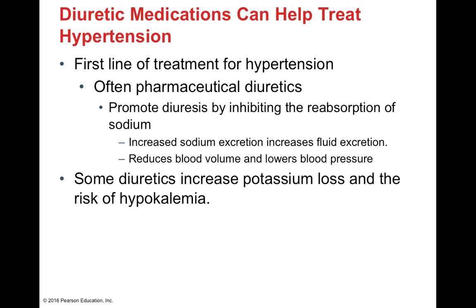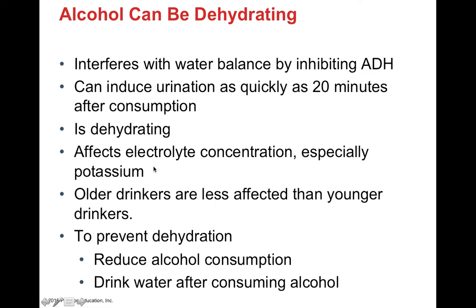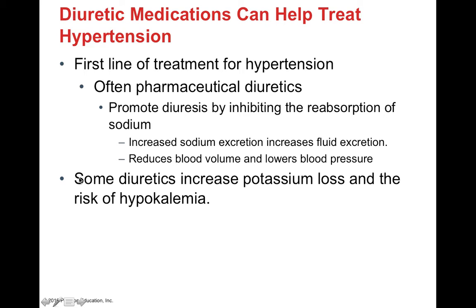Hypertension, or high blood pressure, is generally treated with pharmaceutical diuretics that promote diuresis by inhibiting the resorption of sodium. More sodium excreted means more fluid excreted — wherever sodium goes, water follows — reducing blood volume and lowering blood pressure. However, diuretics can also increase potassium loss, increasing the risk of hypokalemia, or low potassium. Since alcohol also affects potassium levels, individuals taking diuretic drugs are often told not to drink in order to maintain their electrolyte balance, particularly potassium levels.